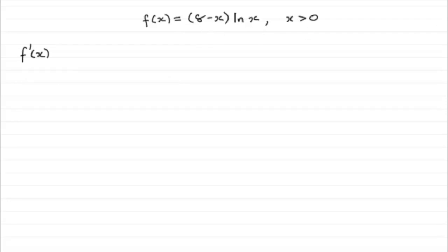And to do this, what we've got is two functions of x being multiplied together, 8 minus x multiplied by the natural log of x. So that means that we need to use the product rule.